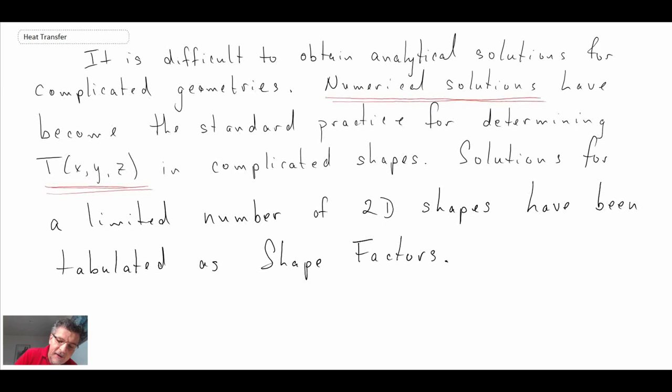Shape factors have been tabulated for a number of two-dimensional shapes that are too complex to use the heat diffusion equation to solve. And the nice thing about a shape factor is it gives us kind of a quick and dirty way of being able to calculate heat transfer from one object to another.